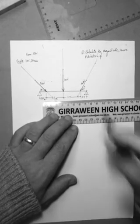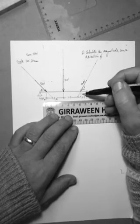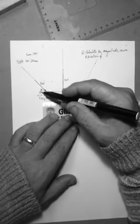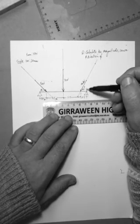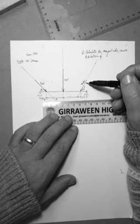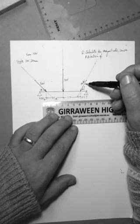The next stage, once you've set up an accurate scaled diagram of the distances, is to set up the forces, and the forces are acting at an angle, and they have a magnitude, and they have a direction, and a sense.